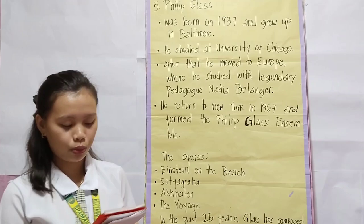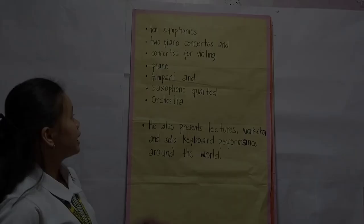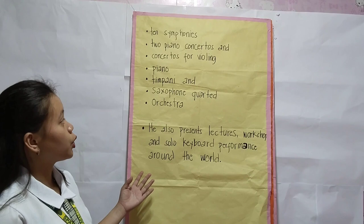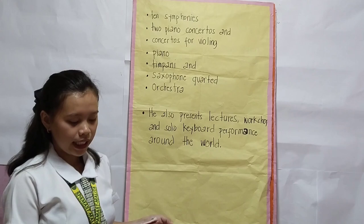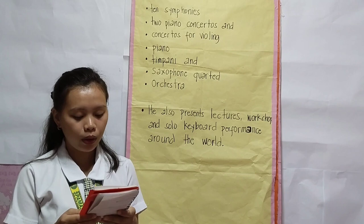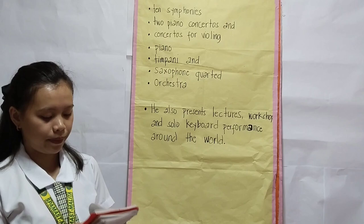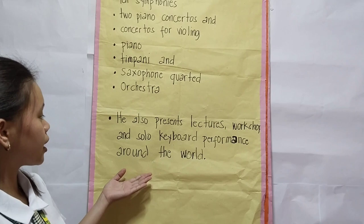In the past twenty-five years, Glass has composed more than twenty operas large and small. He has written ten symphonies, two piano concertos, and concertos for violin, piano, timpani, and saxophone quartet and orchestra. He has written fifteen operas, numerous chamber operas and musical theater works, fourteen symphonies, twelve concertos, nine string quartets, and various other chamber music and many film scores. He also presented lecture workshops and solo keyboard performances around the world. His musical style was eventually dubbed minimalist.